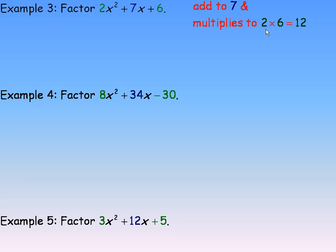There are lots of numbers that multiply to 12. For example, 2 and 6 multiply to 12, but they don't add to 7, so they're not the numbers we're looking for. 1 and 12, but again, that doesn't add to 7. The numbers you need are 3 and 4. 3 and 4 multiply to 12, and they also add to 7.